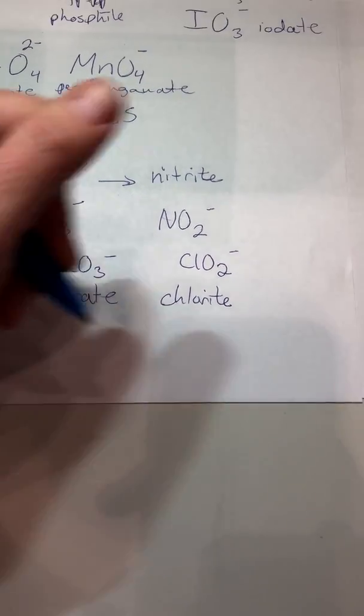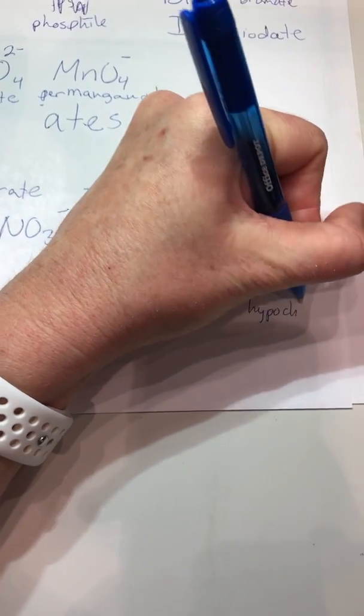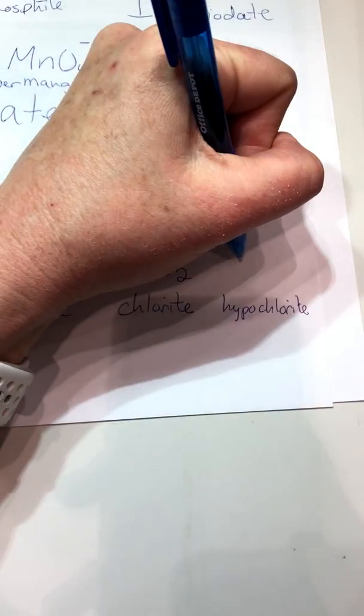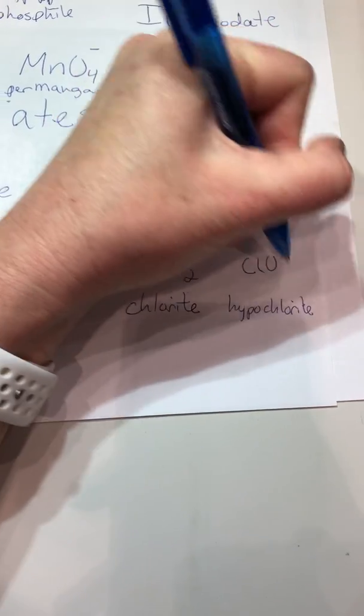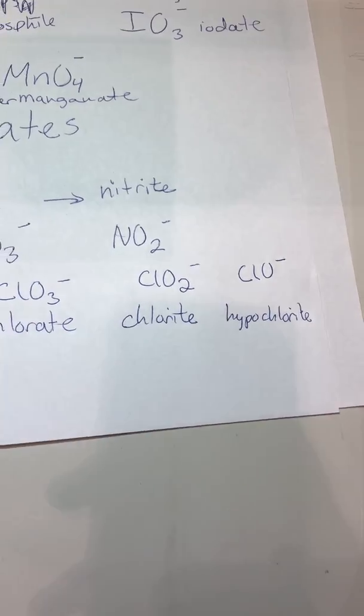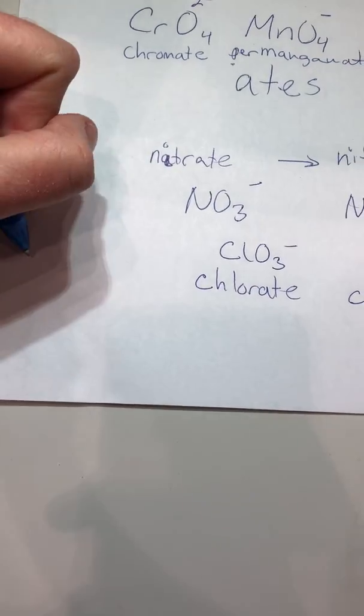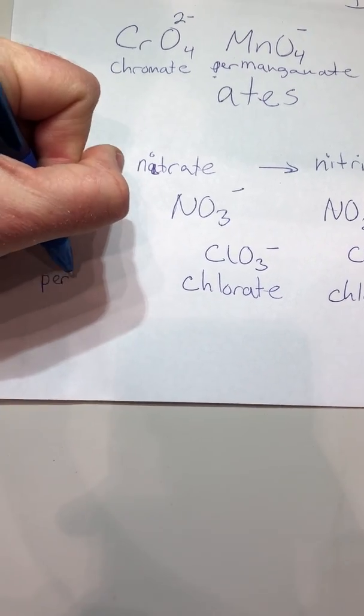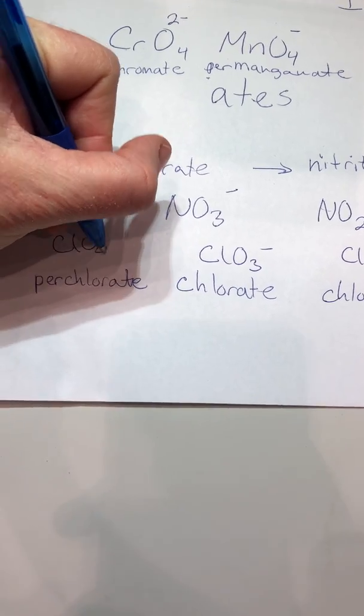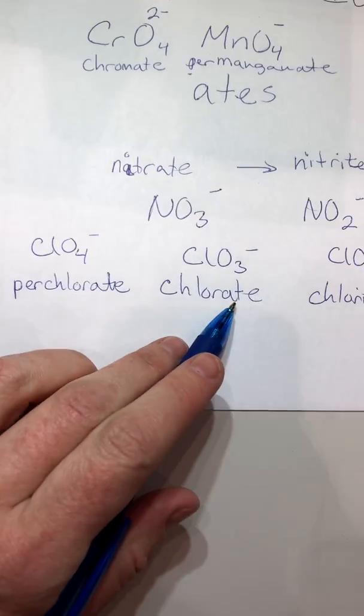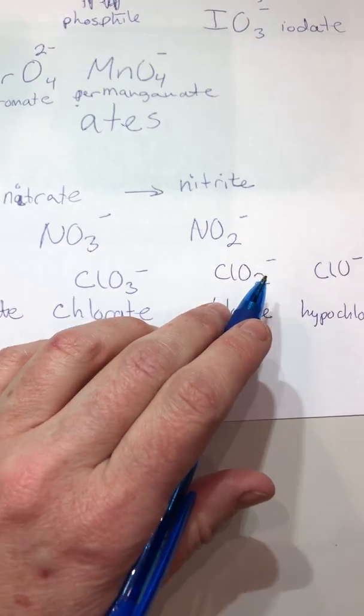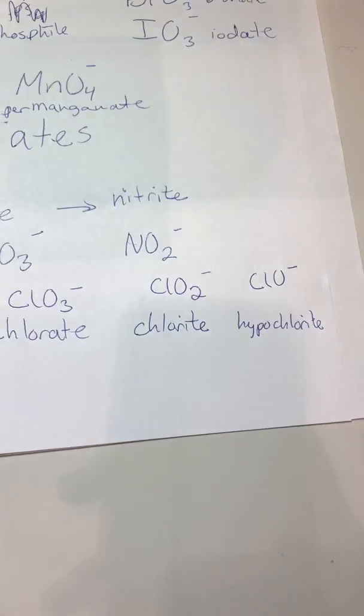Hypo means less. So hypochlorite would be even one less oxygen. So it'd be ClO minus. The opposite of hypo is hyper, but they shorten it to per-. So perchlorate is simply ClO4 negative. It's got one more oxygen than chlorate did. Perchlorate, the most. Chlorate, three. Chlorite, two. Hypochlorite, just one.